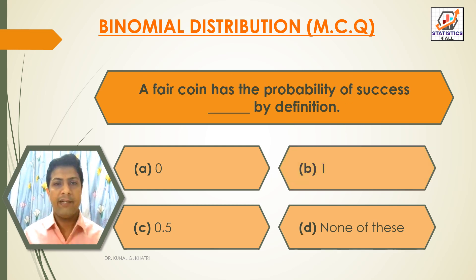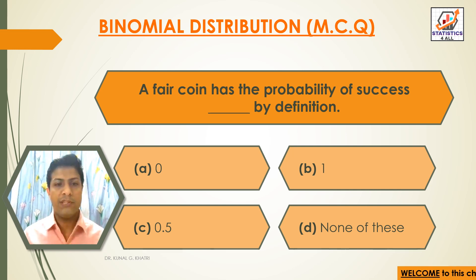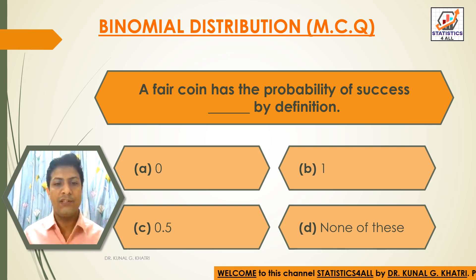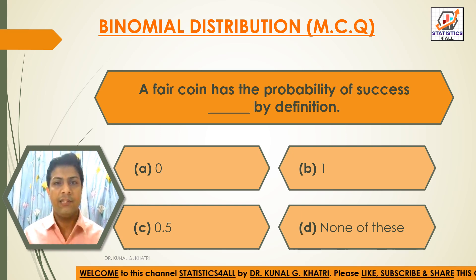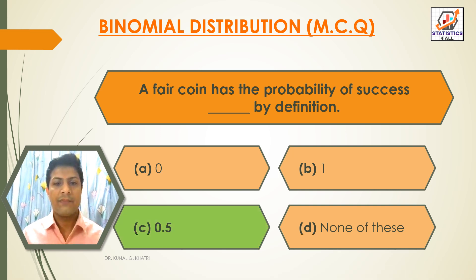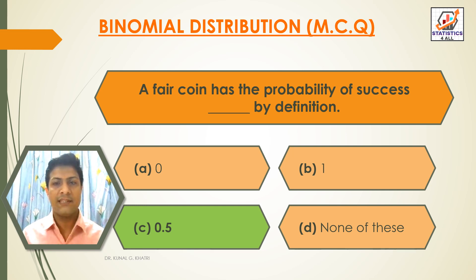Next question: A fair coin has the probability of success dash by definition. Option A: 0. Option B: 1. Option C: 0.5. Option D: None of these. The answer is option C — 0.5. A fair coin has the probability of success 0.5 by definition.